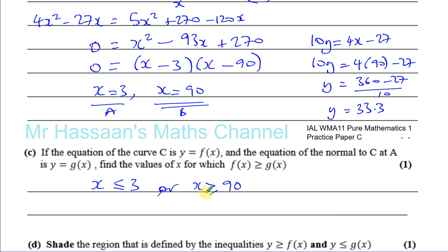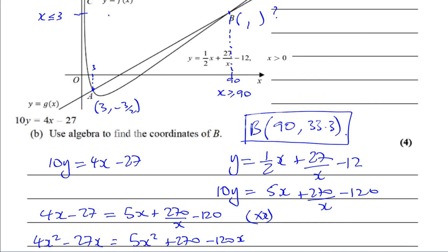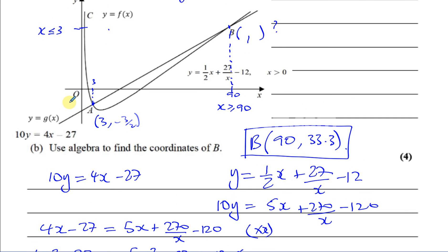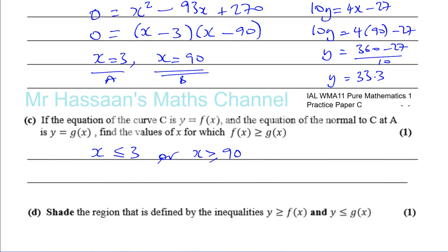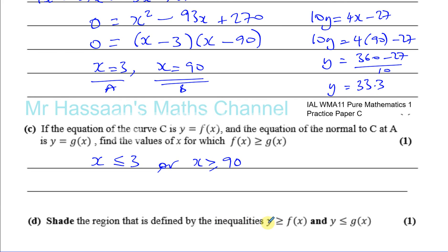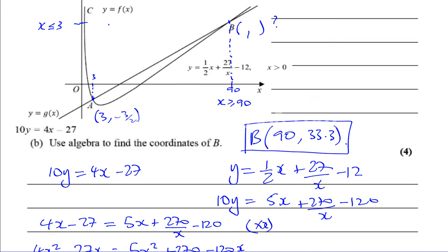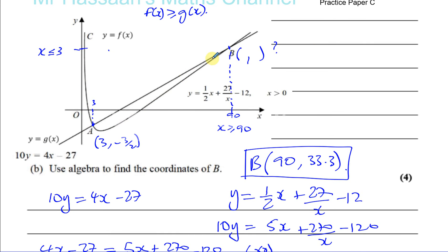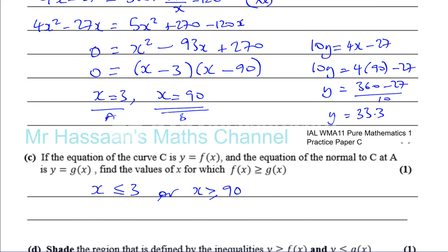The two intersection points were at x equals 3 and x equals 90. The curve is above the line when x is less than 3 or greater than 90; between 3 and 90 the curve is below the line. The region defined by y greater than f(x) and y less than g(x) is the region above the curve and below the line — that region is shaded. That's the end of this question.